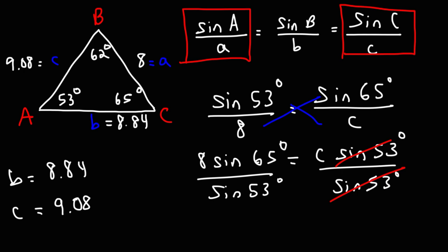A quick way to check your answers is that the sides across a larger angle should be longer. For instance, angle A is the smallest angle, so side A should be the shortest side. Angle C is the largest angle, so side C should be the longest side. That's a quick way to test whether your answers make sense.